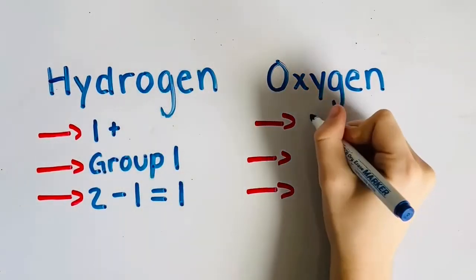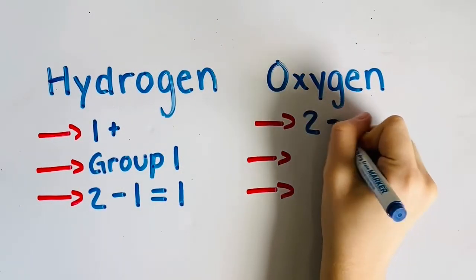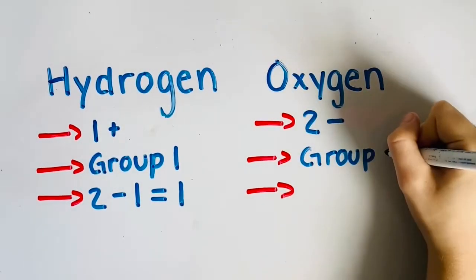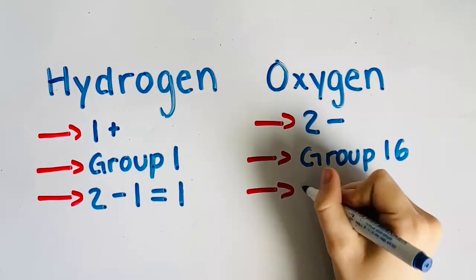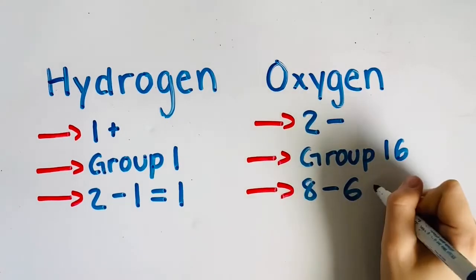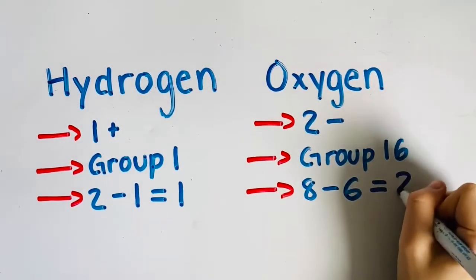Oxygen has a charge of negative two. We know this because oxygen is found in group 16 of the periodic table. Oxygen needs eight valence electrons to complete its valence shell, and it currently has six valence electrons. Eight minus six is two, therefore it needs two electrons to complete its valence shell.